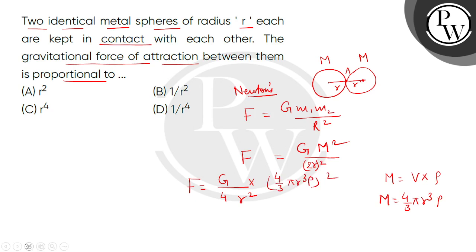So now we can see the constants here, like G, this 4, and 4 by 3 pi and rho. This square will come out as constant. So what will we get basically?